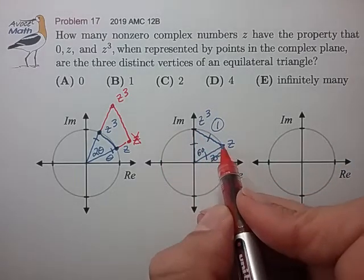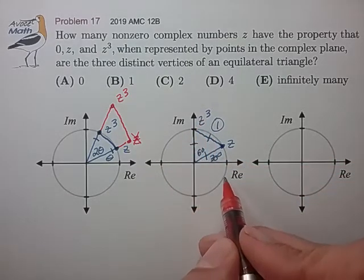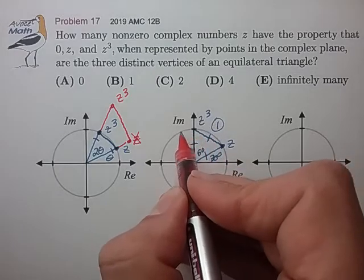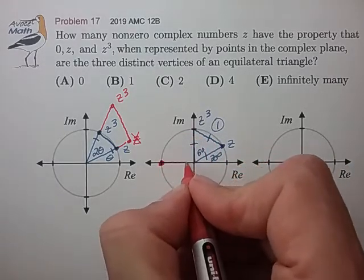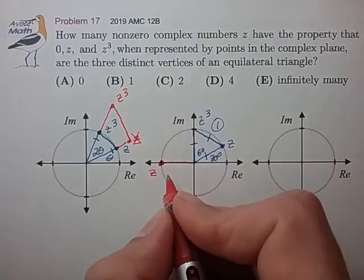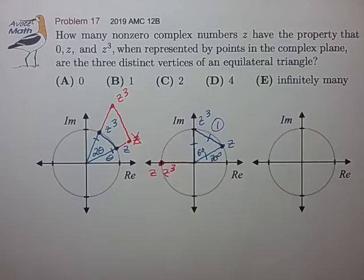It looks like when z gets to 180 degrees, z cubed will have raced away to 3 times 180 or 540 degrees. So it looks like when z is at 180 degrees, z cubed will have caught up and be coincident. But what happens before then?